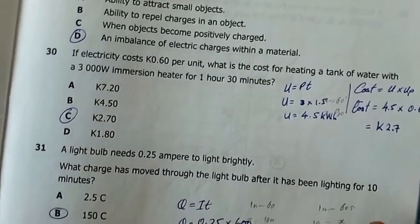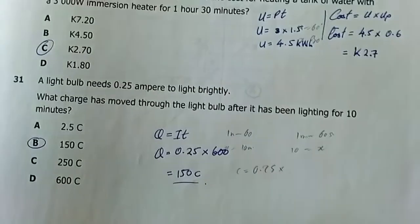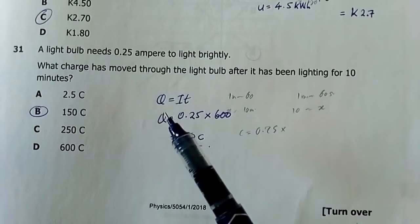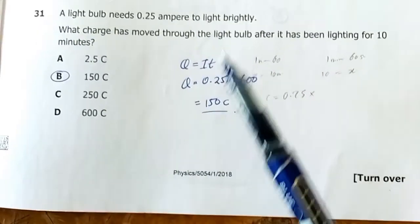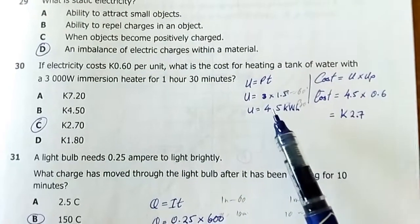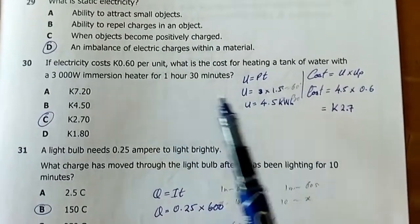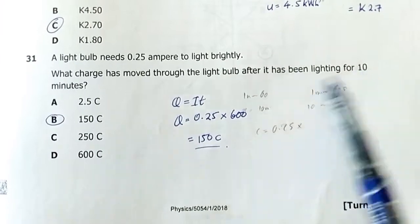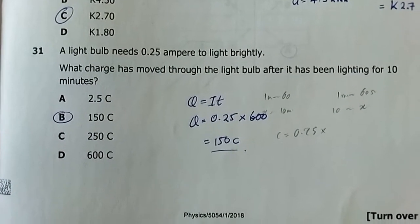Question 31: A light bulb needs 0.25 A to light brightly. What charge passes through it in 10 minutes? Using Q = It: convert 10 minutes to 600 seconds, then Q = 0.25 × 600 = 150 coulombs. Remember: for electricity cost calculations, use kilowatts and hours; everywhere else, convert time to seconds. Answer is B.